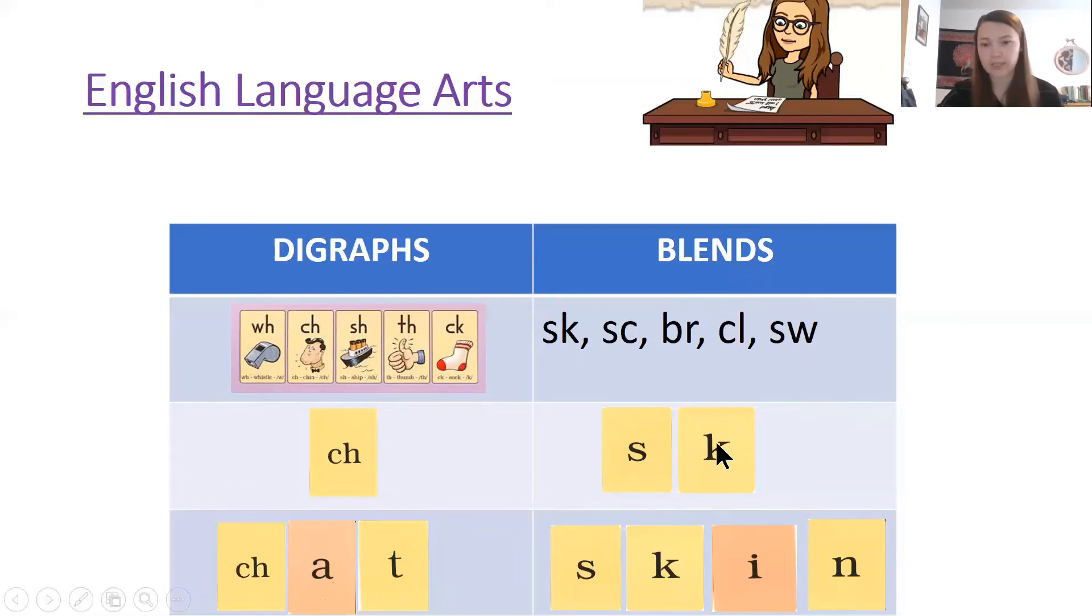So I'm going to remind us again how we can tap out a word with a blend in it. I'm going to do it one more time faster. And the word is skin. Okay so that's the difference between a blend and a digraph. A blend has two letters that each get their own tap, each make their own sound, and a digraph has two letters that come together to make one sound.